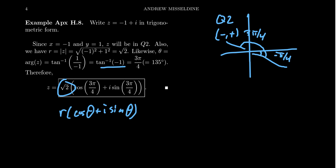So we plug in the modulus with the square root of 2. We plug in the angle, which is 3 pi over 4. And we see that z equals the square root of 2 times cosine of 3 pi over 4 plus i sine 3 pi over 4.